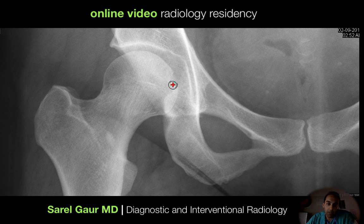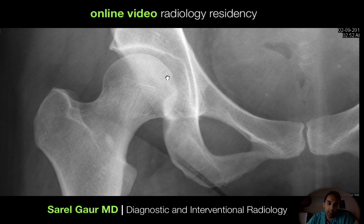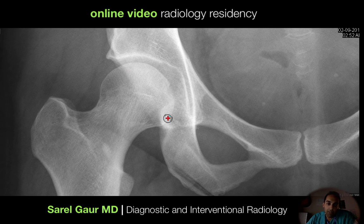Moving on from the femoral neck, I'm now looking at the femoral head. I want to point out this is the subcapital region and this is the basocervical region of the neck. Femoral neck fracture is definitely something to focus on. Femoral head fracture is less common, although I'm looking for it — in the setting of a hip dislocation, you can get a femoral head fracture. So I'm just looking at the rounding curvature of this femoral head.